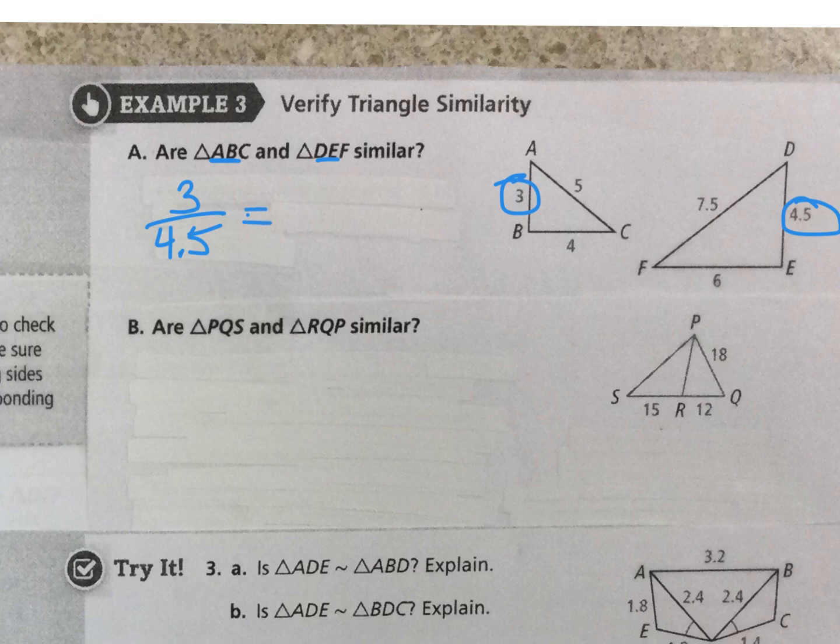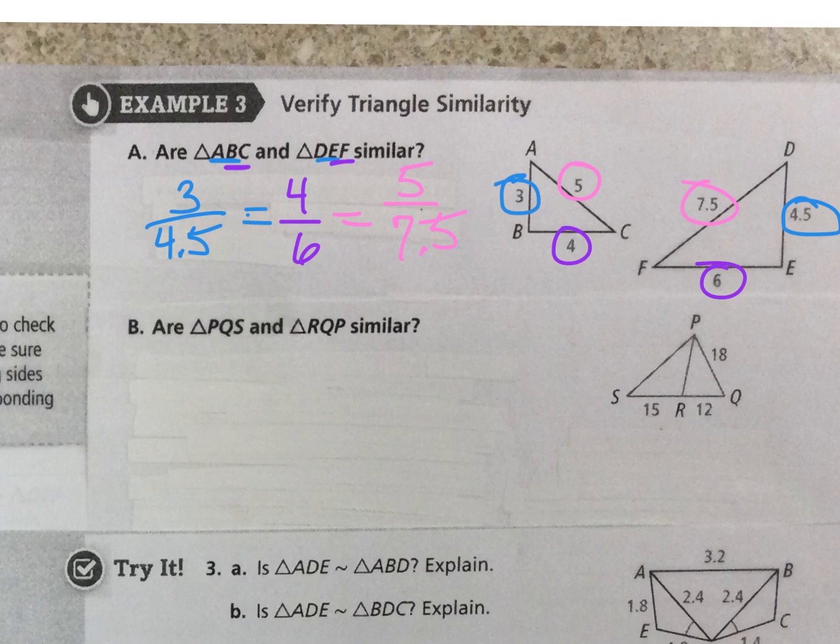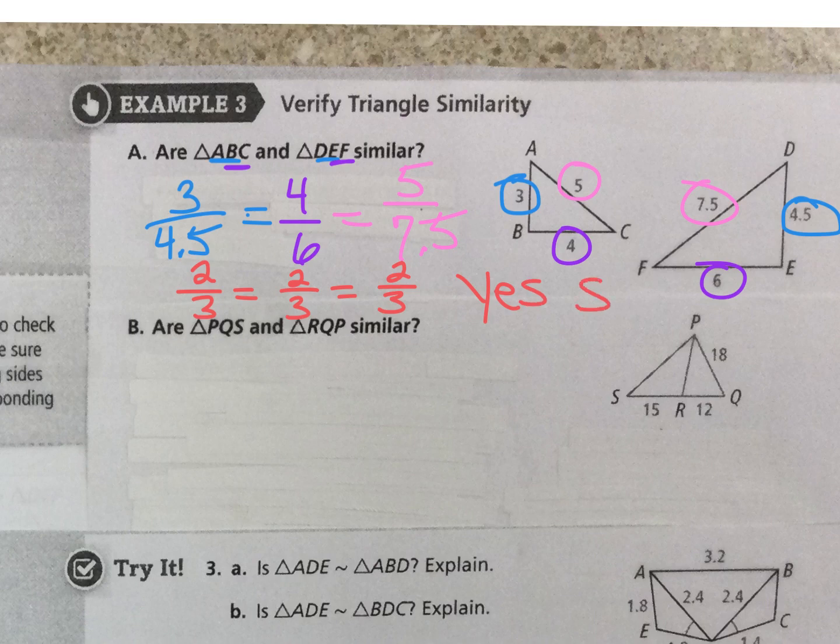And then the next side, BC and EF. BC is 4, and EF is 6. So that's the middle side. And then, of course, the longest side would relate to the longest side. So let's check. If we check these, you can put them in your calculator and get a decimal. If you get a fraction, you get 2/3 equals 2/3 equals 2/3. So all the proportions are the same. So yes, these are similar by side, side, side.